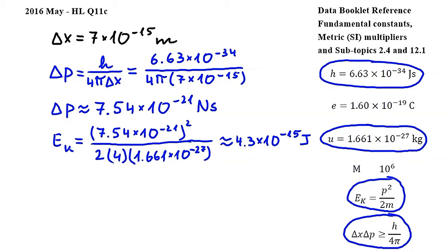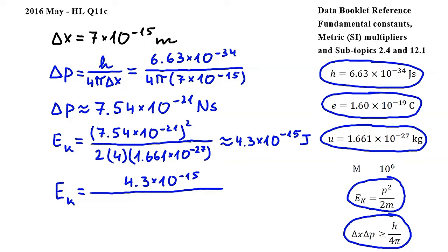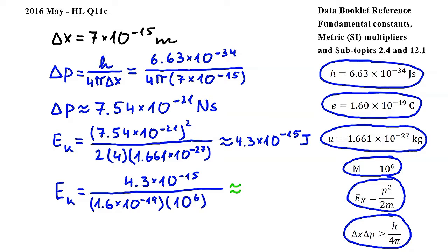Let's convert this value into mega electron volts. To convert from joules to electron volts, we have to divide the value in joules, 4.3 times 10 to the power of negative 15, by the elementary charge, which can be found in the fundamental constant section of the data booklet and is equal to 1.6 times 10 to the power of negative 19. This gives us the kinetic energy in electron volts. In order to change this into mega electron volts, we use the conversion from the data booklet, meaning we divide by 10 to the power of 6. Carrying out this calculation and rounding, we get approximately 0.027 mega electron volts.